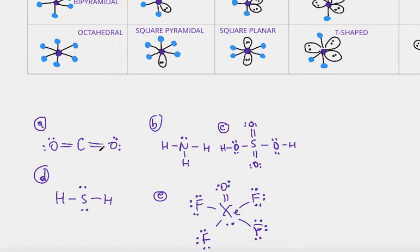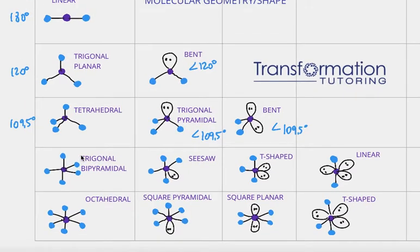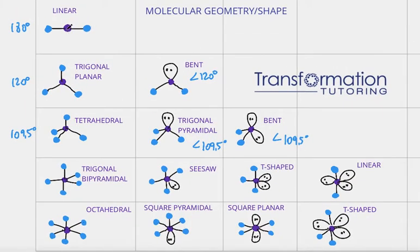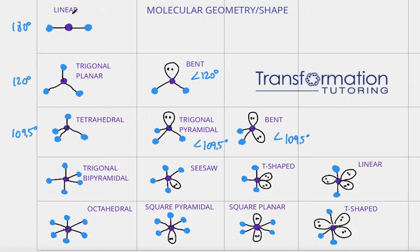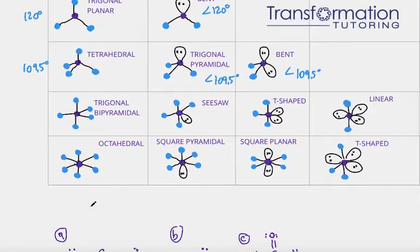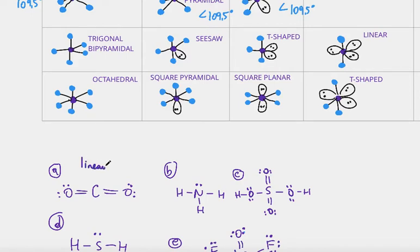In the first example, A, my central atom is carbon, and it's connected to two atoms only. I see that it has no lone pairs — there are no dots around it. I'm looking for a central atom connected to two other atoms. I don't care how it's connected — it could be through a triple bond, single bond, or double bond. All I care is how many atoms it's connected to and how many lone pairs it has. It's connected to two atoms, no lone pairs. Looking at my chart, I find it right here — central atom connected to two other atoms, no lone pairs. Therefore, it is linear.